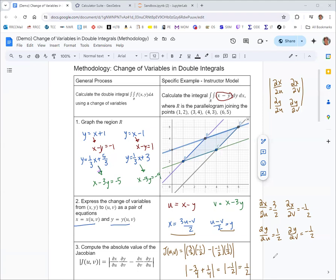So as you change variables from x and y coordinate system to this new uv coordinate system that we're creating, each unit of measure, like essentially a square that's one by one, becomes half the size. And the Jacobian accounts for that.